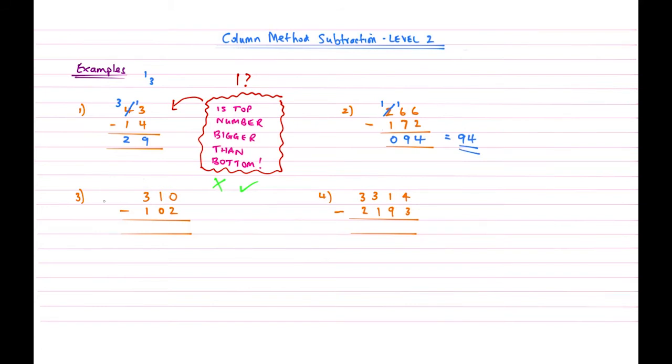Quick example number 3. So 0 take away 2. Well, again, now 0 is smaller than 2, so we're going to have to borrow again. So we're going to borrow 1 from this 1. So that now reduces to a 0 because we're taking the 1 away. Then that now, we'll read that as a 10. 10 subtract 2. That gives me an answer of 8.